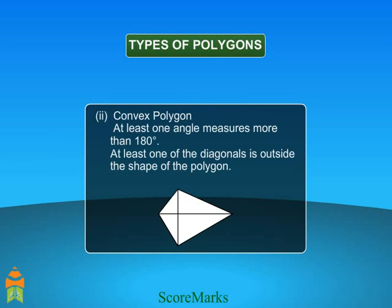Convex Polygon: a polygon in which all of its angles are less than 180 degrees.